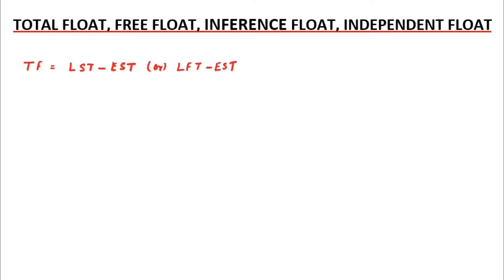Now for free float. The free float means the amount of time by which an activity can be delayed without affecting the beginning of the succeeding activities. Unlike total float which concerns the entire project, in free float the succeeding or beginning activity will not be affected by the delay. The formula for free float is: EST of succeeding activity minus EFT of current activity.